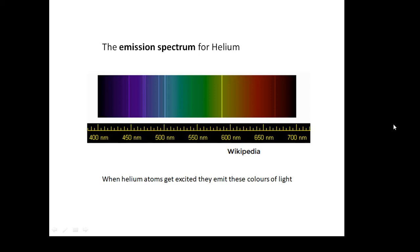If we can measure the wavelength of the light given off by something, we can actually work out what elements it contains. It's a bit like a barcode. Each element has its own barcode. And when helium atoms get excited, this is the barcode for helium, its emission spectrum.